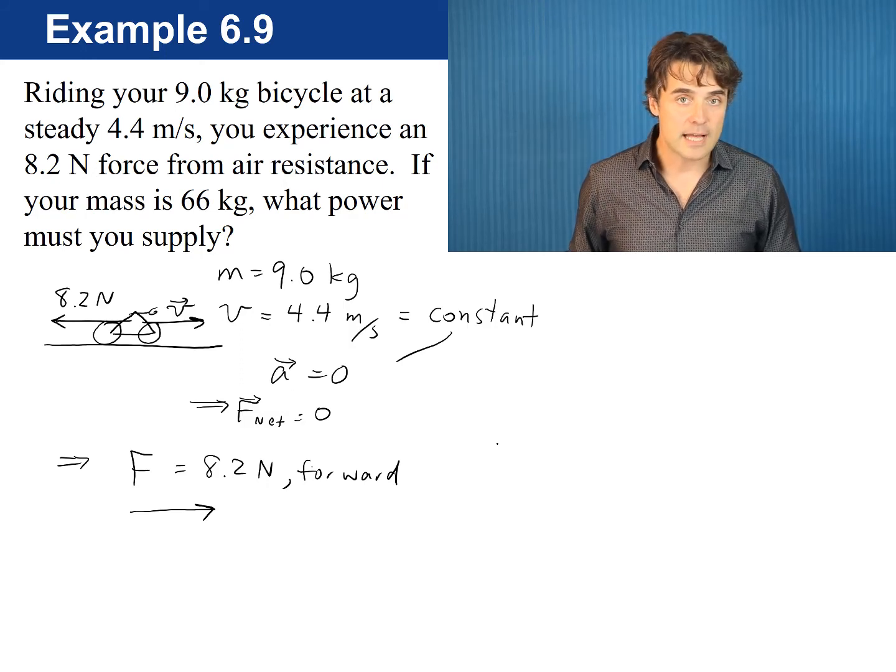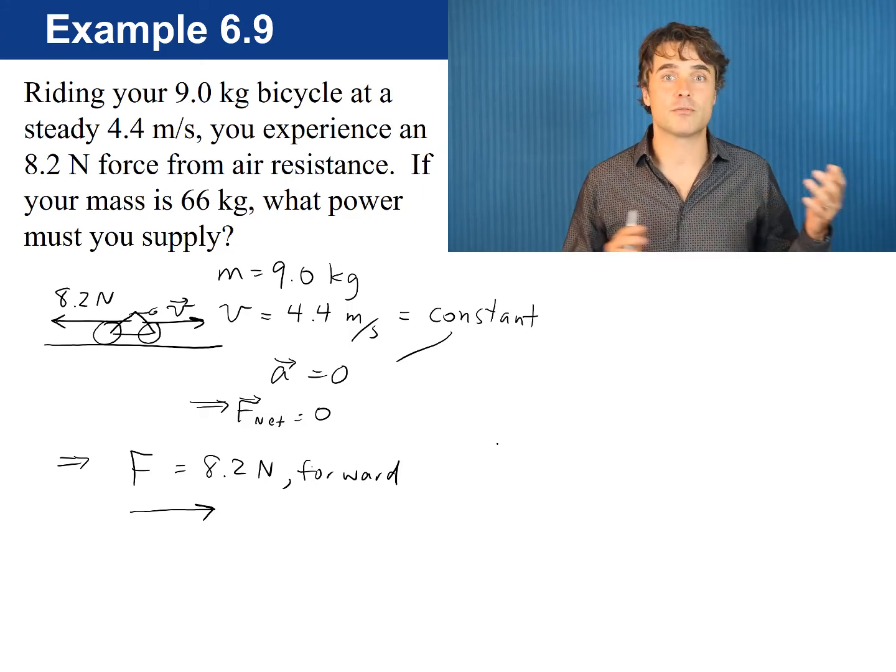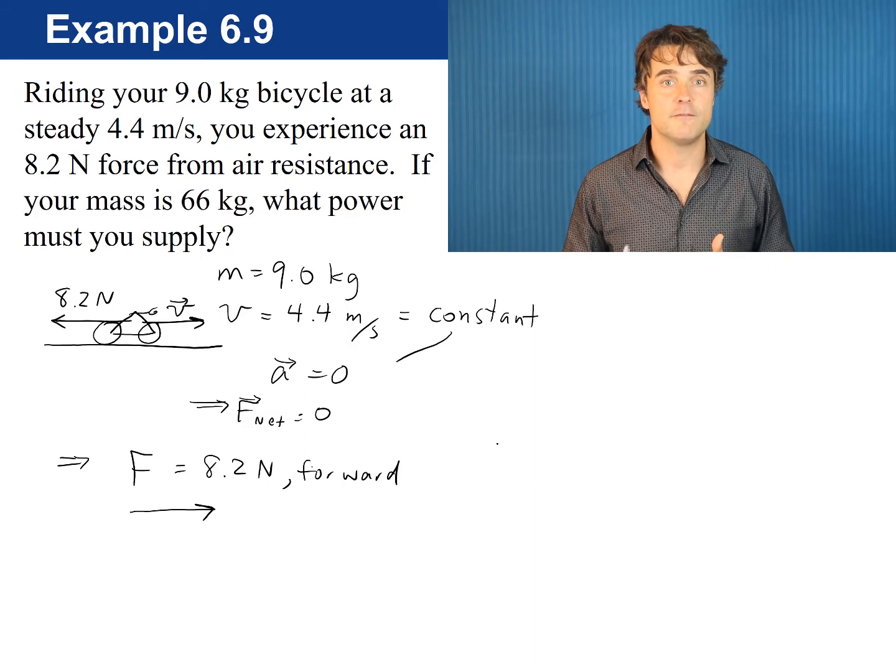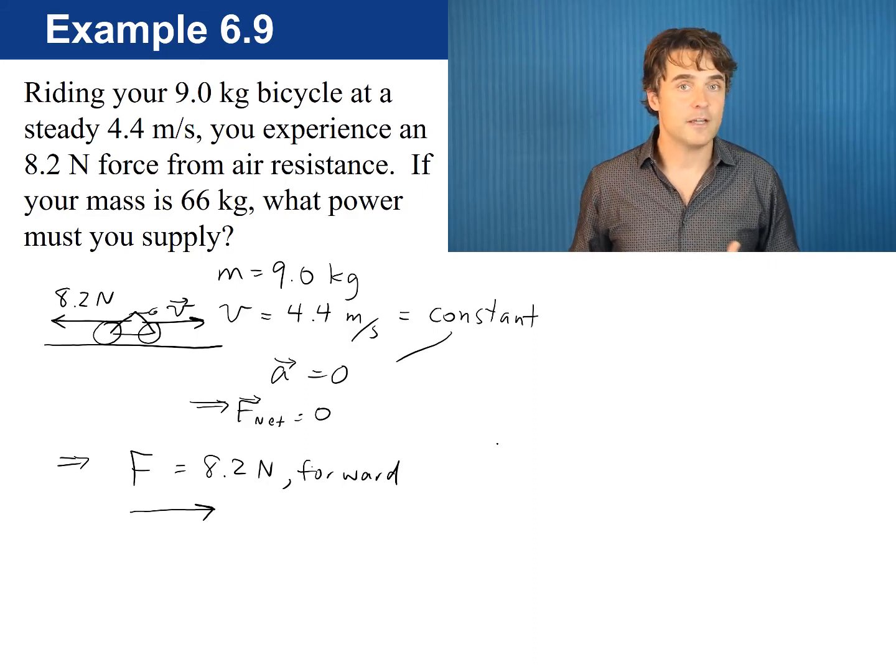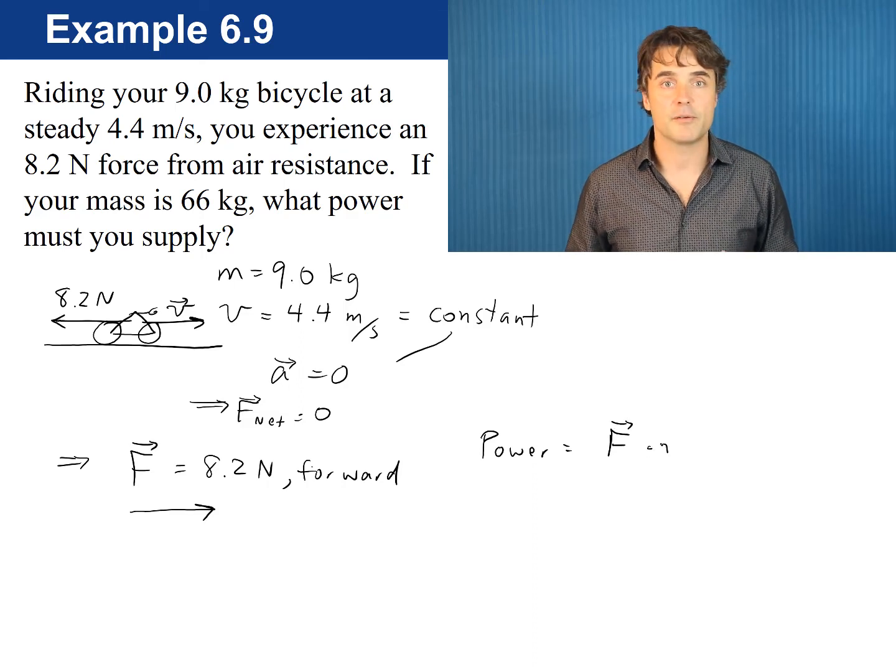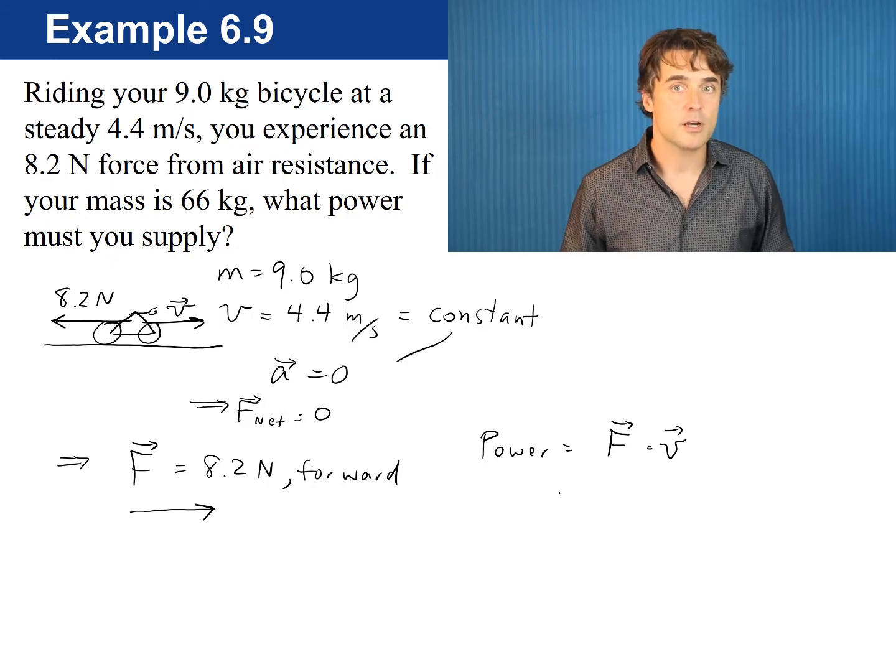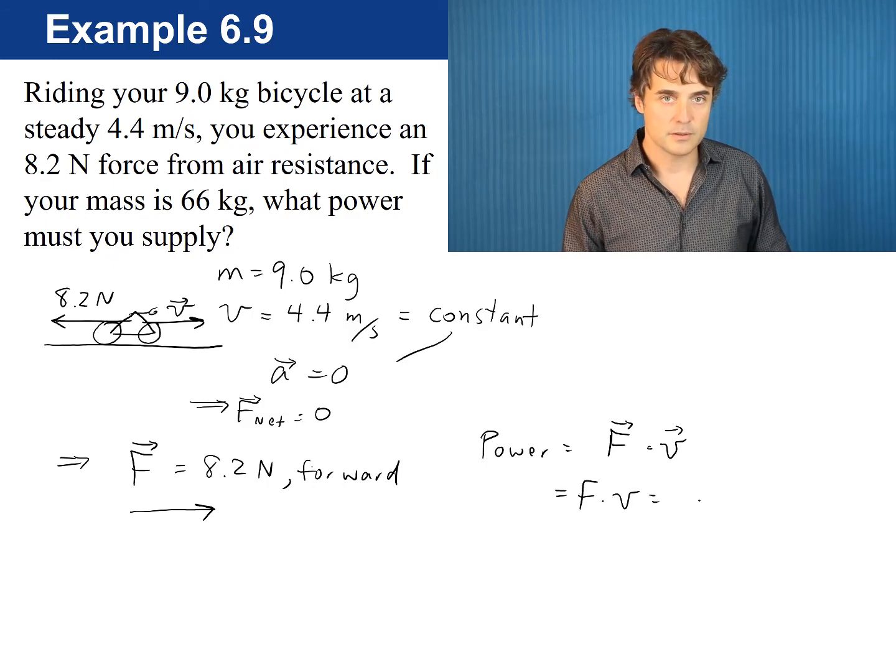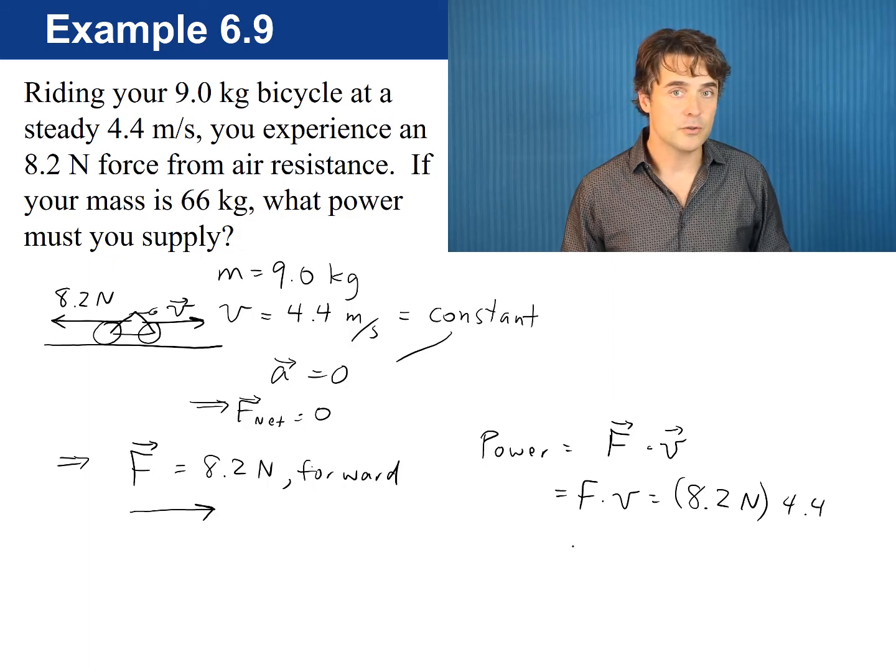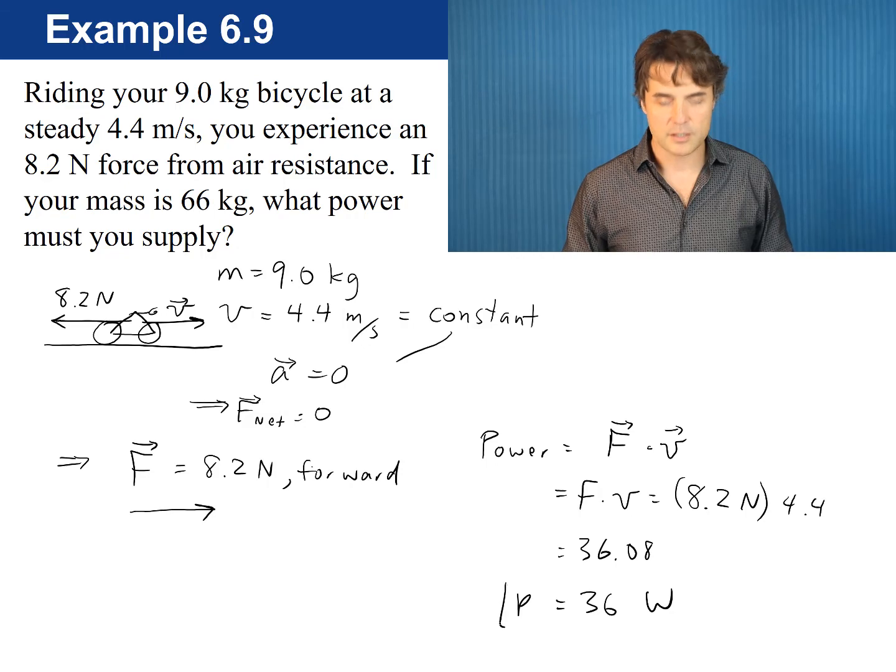Now, the question is asking, what is the power provided by that force? So, we just use the equation we derived in the previous slide for power, p equals f dot v. Since f and v are in the same direction, the dot product is just the product of their magnitudes. p equals 8.2 times 4.4 which equals 36.08. We can write the final answer to two significant figures. Power equals 36 watts.